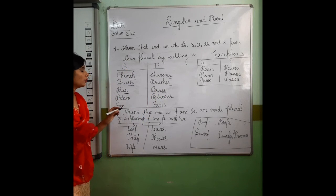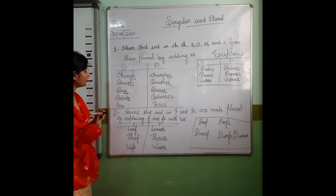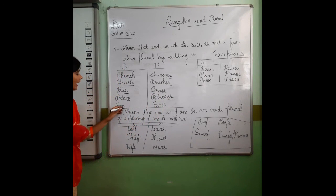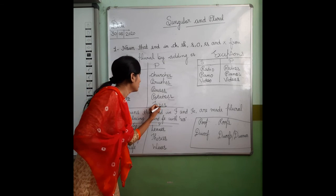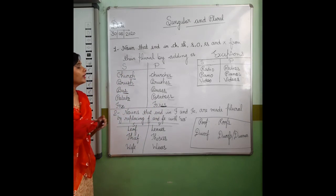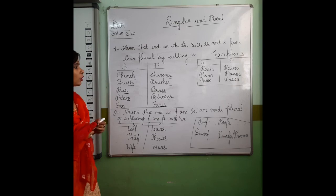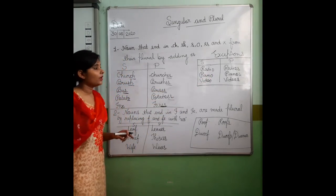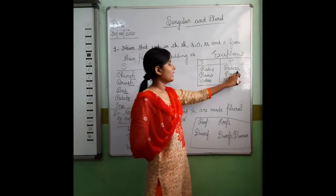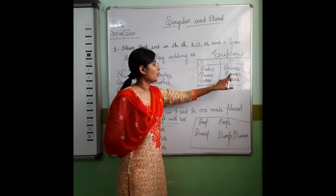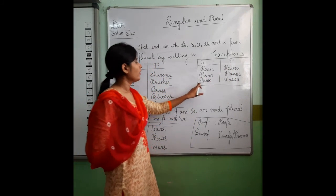Next — potato: what comes at the end? O. So we will add ES for plural. Paws — ends in X, so for plural we will add ES here. Here are some exceptions also: live, radio — although they end in O, their plural is made by adding only S. The second exception is piano — pianos, only S added. Video — videos, only S added.